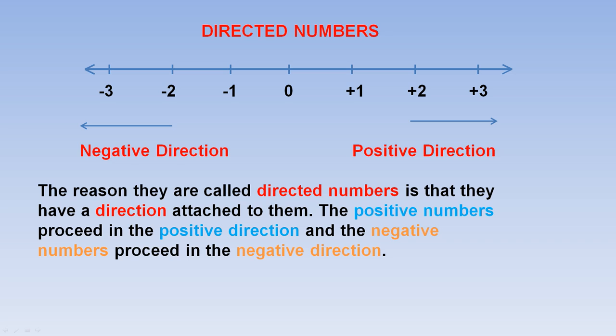Directed numbers. The reason they are called directed numbers is that they have a direction attached to them. The positive numbers proceed in the positive direction and the negative numbers proceed in the negative direction.